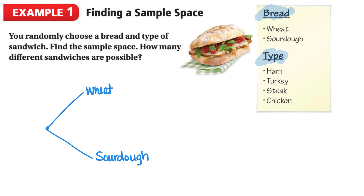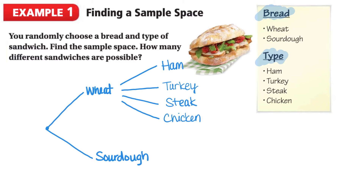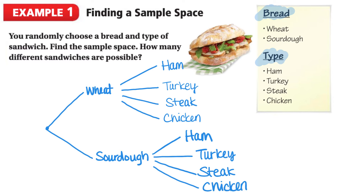So if we chose wheat, we could then extend the branches for each type of sandwich: ham, turkey, steak, and chicken. And if we chose sourdough, we would also extend the branches for each type of sandwich: ham, turkey, steak, and chicken. Now we can determine the number of possible outcomes by counting up these branches, and here we can see that we have eight different possible outcomes.